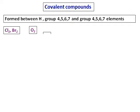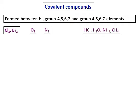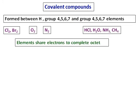Some examples are chlorine, bromine, oxygen, and nitrogen. There are also compounds with hydrogen: HCl, water, ammonia, methane, etc.